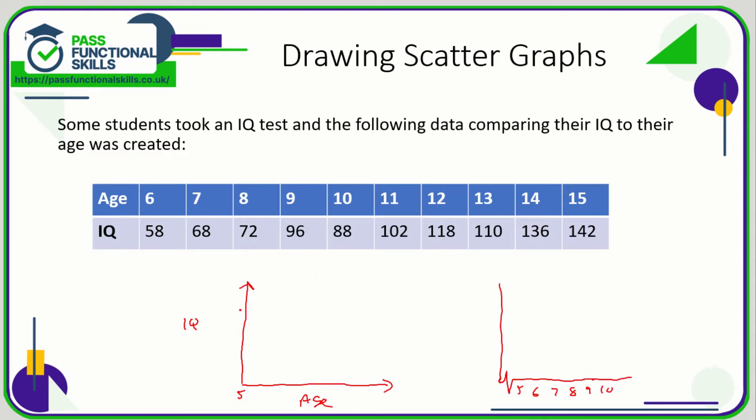For the IQ, we'd probably go up in—well, it depends how much space you've got, but you definitely wouldn't go up in ones. Otherwise, we're going all the way up to 142. You'd probably go up in tens. Twenties might be better. Again, it depends how many squares you've got available.